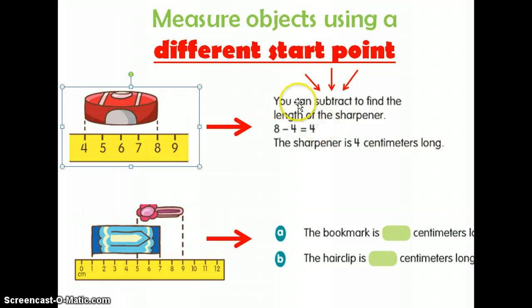What you can do is you can subtract to find the length of the sharpener. So here, if you notice, they started with eight. Eight is the biggest number. Remember that when we subtract, we always start with the biggest number. So we have eight minus four. The four comes from where they started measuring. So eight minus four equals four. The length of the sharpener is four centimeters.